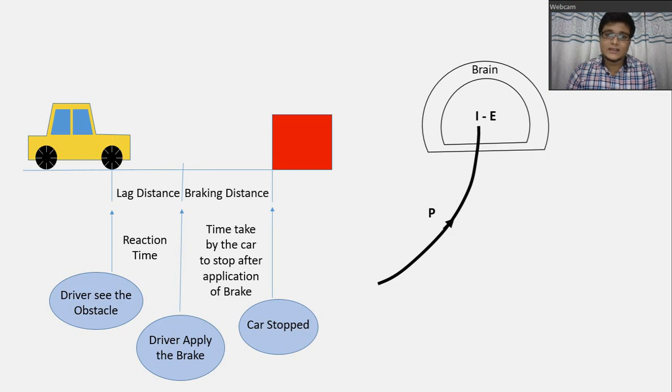the brain will send the signal to some body parts to apply the brake. So, this process is known as volition.